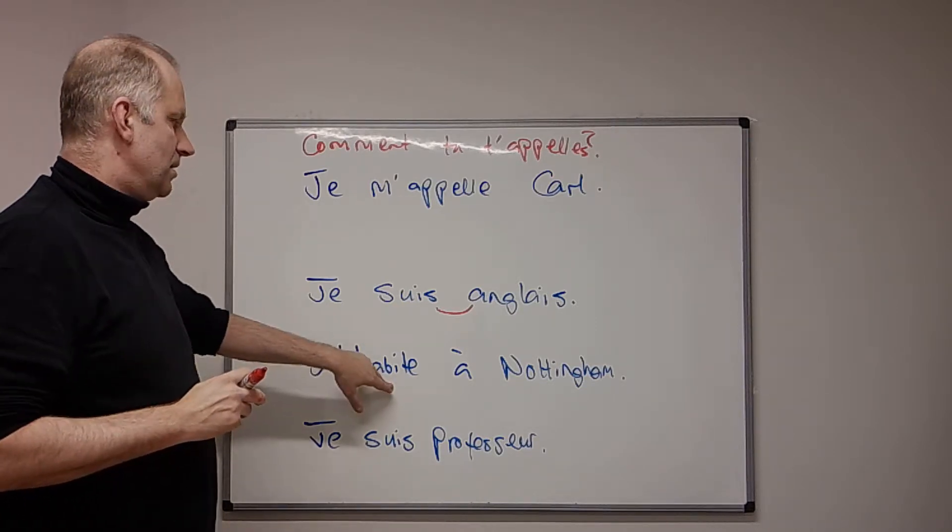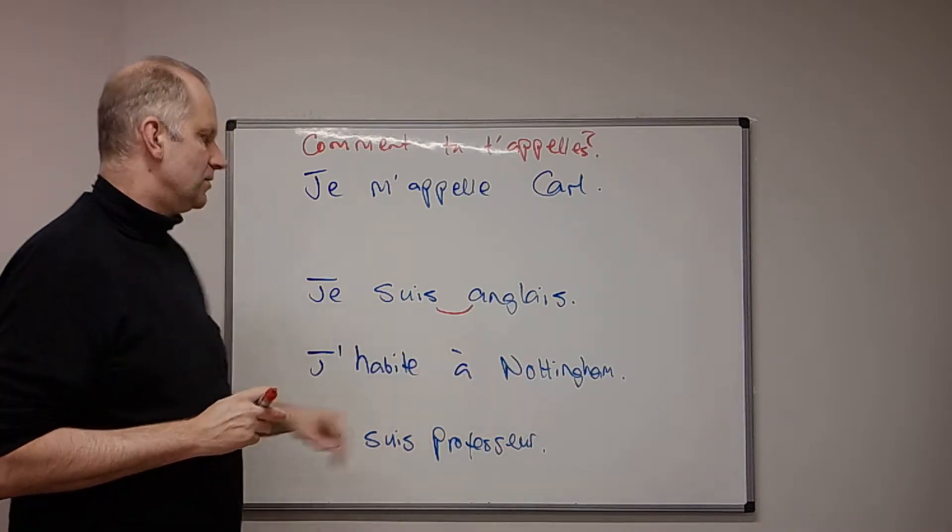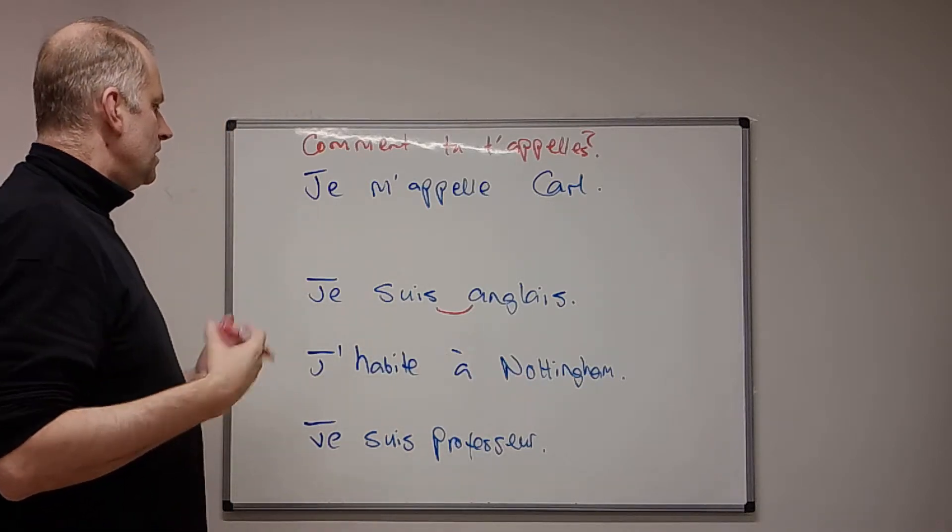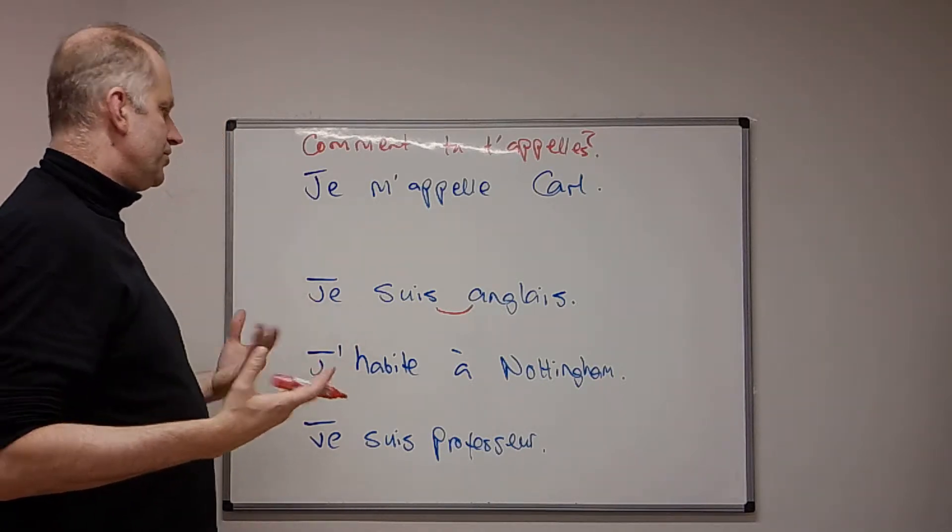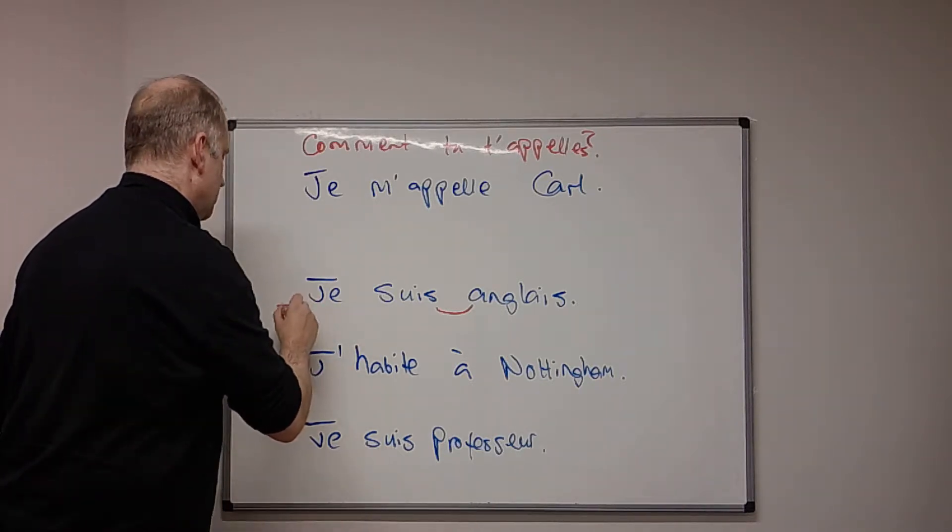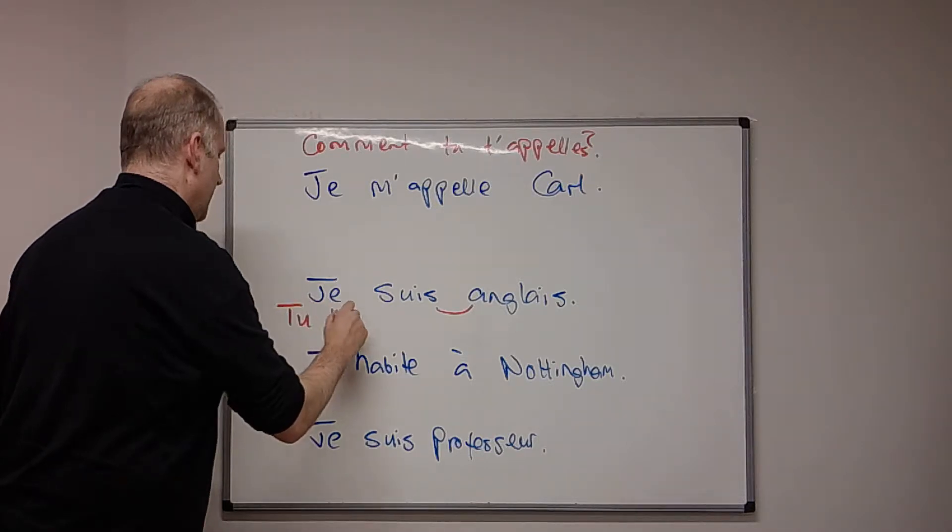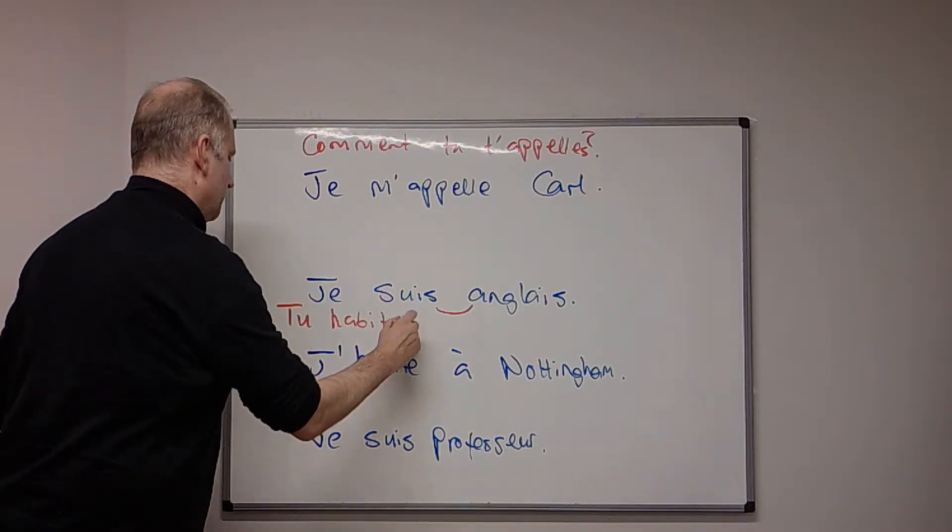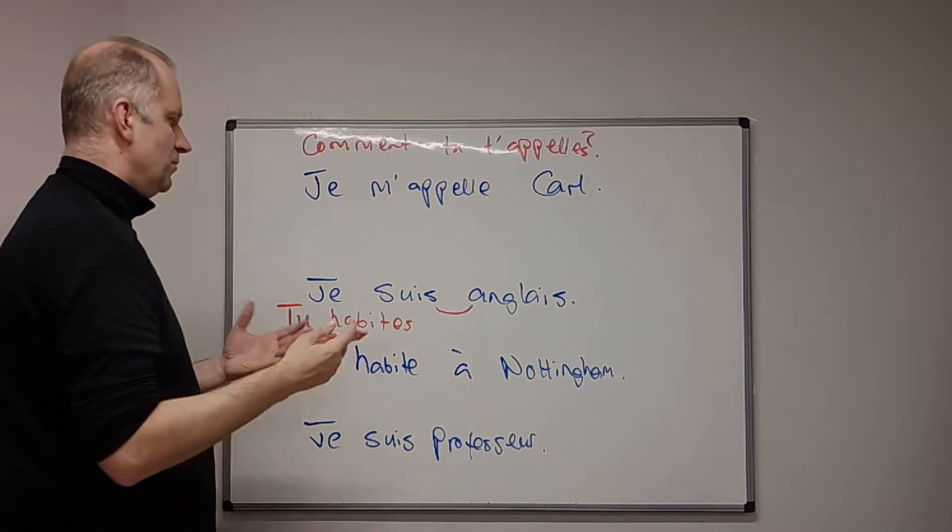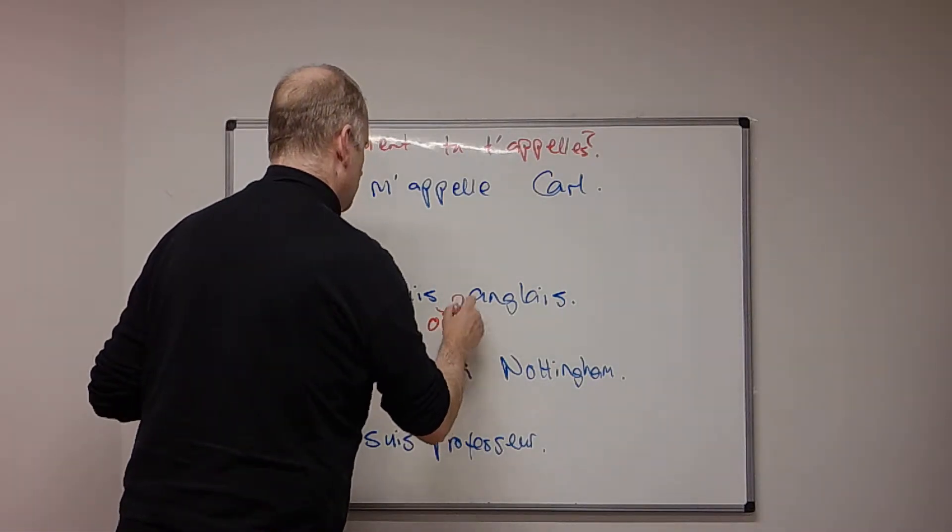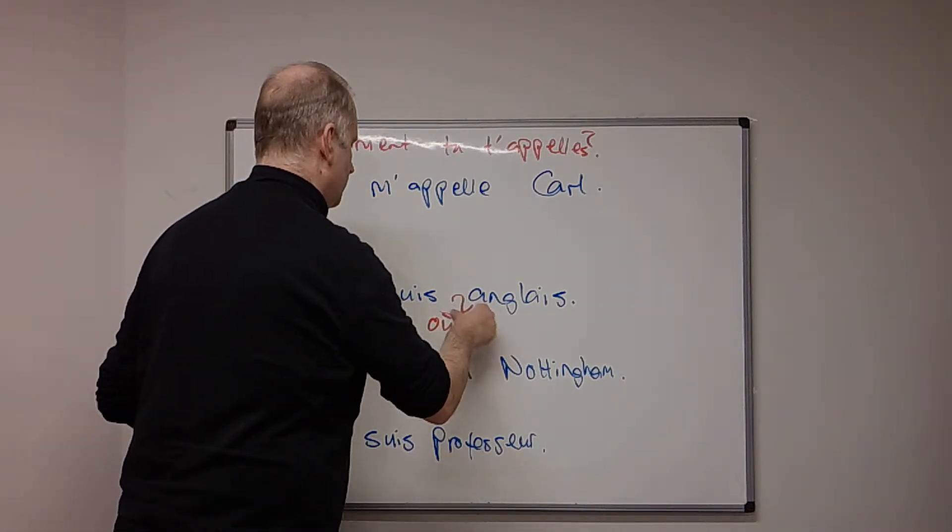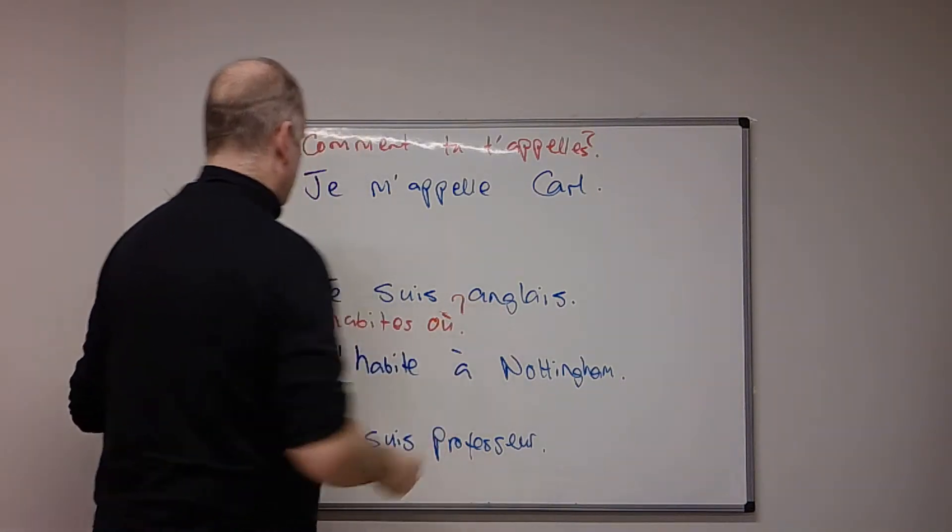so j'habite, I live in Nottingham. So we can say, you live, so to make a question in French, you can just say like a sentence, you live, tu habite, and then we can put the question word where, où, after, tu habite où? Or we can do it another way.